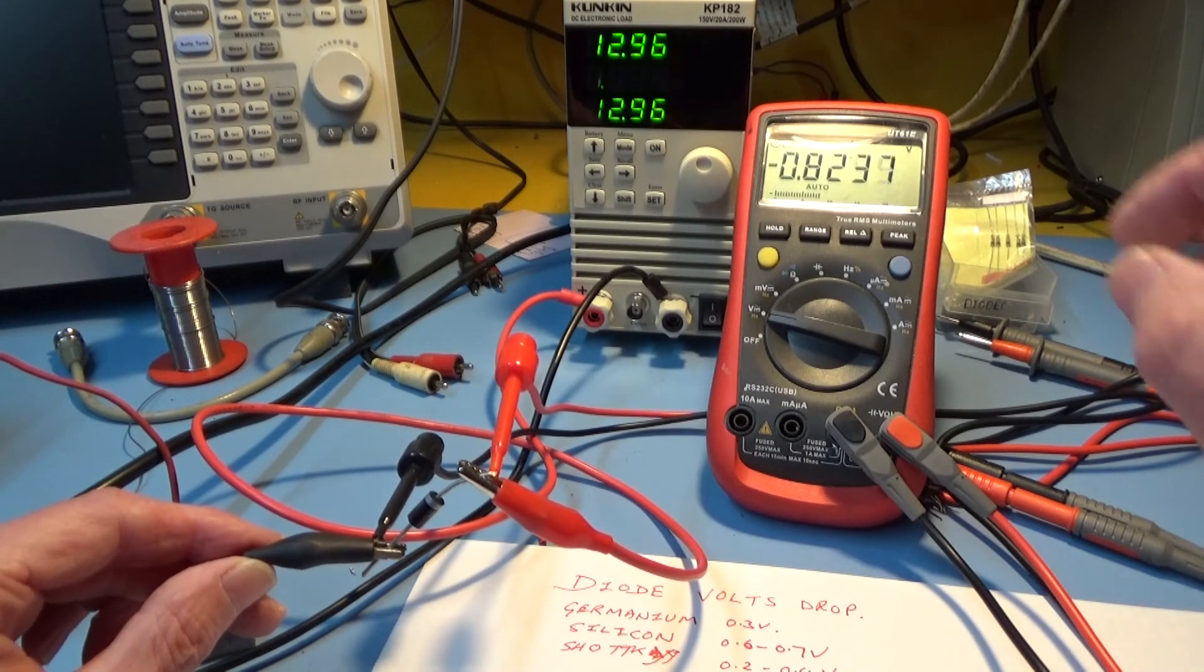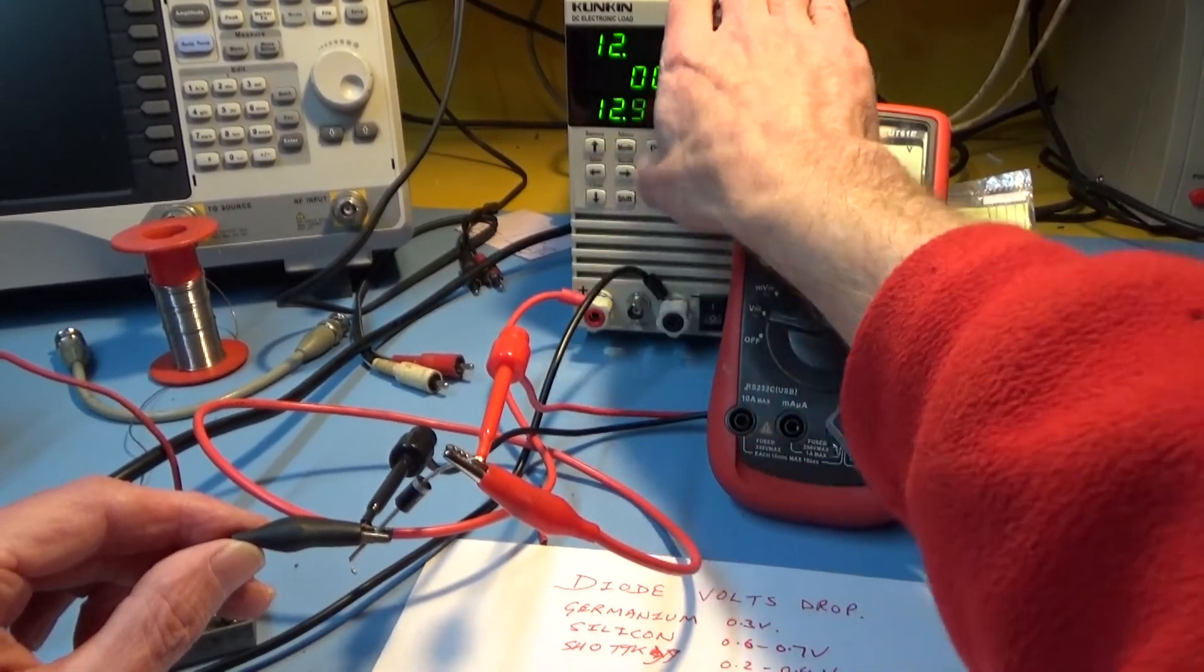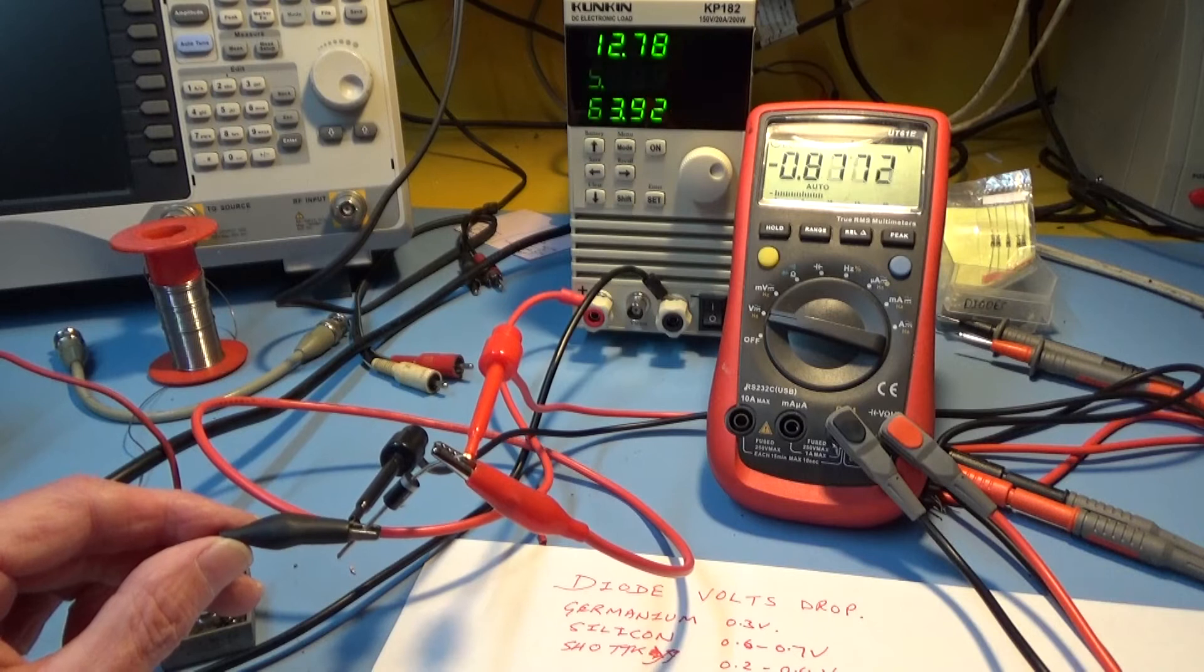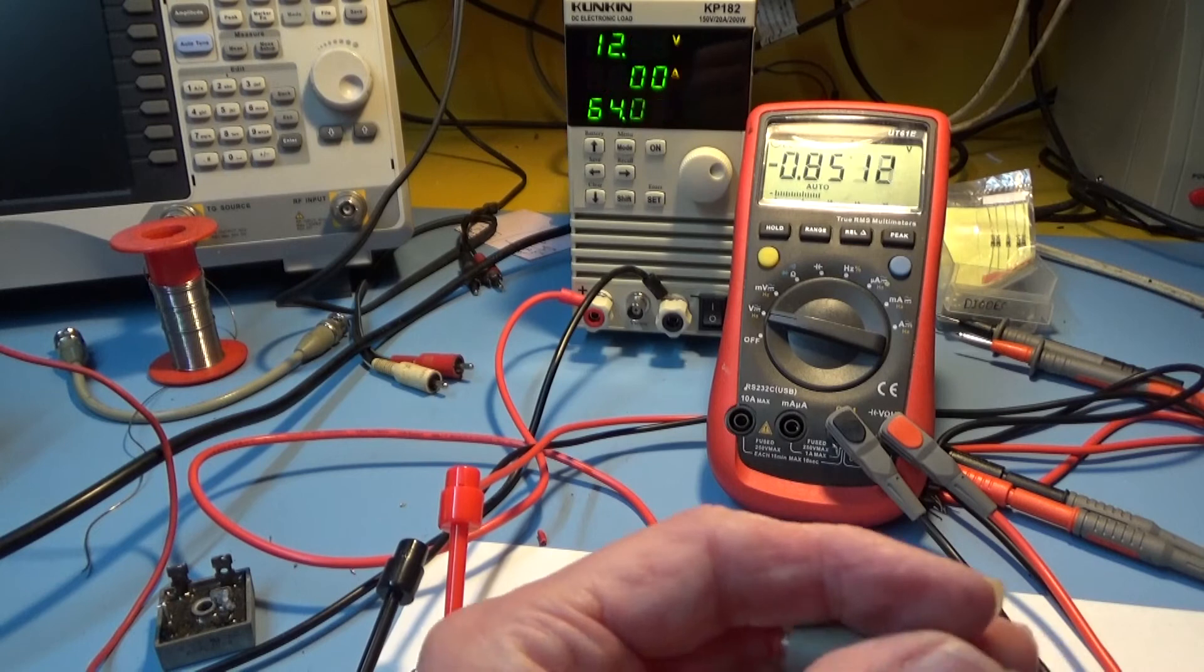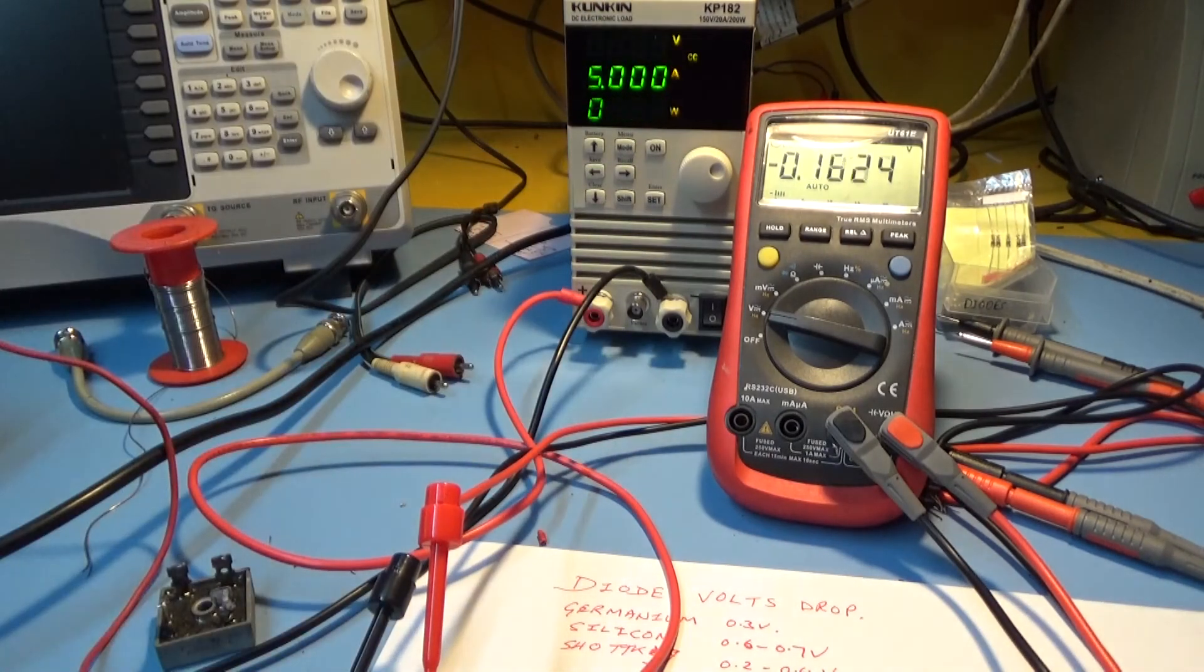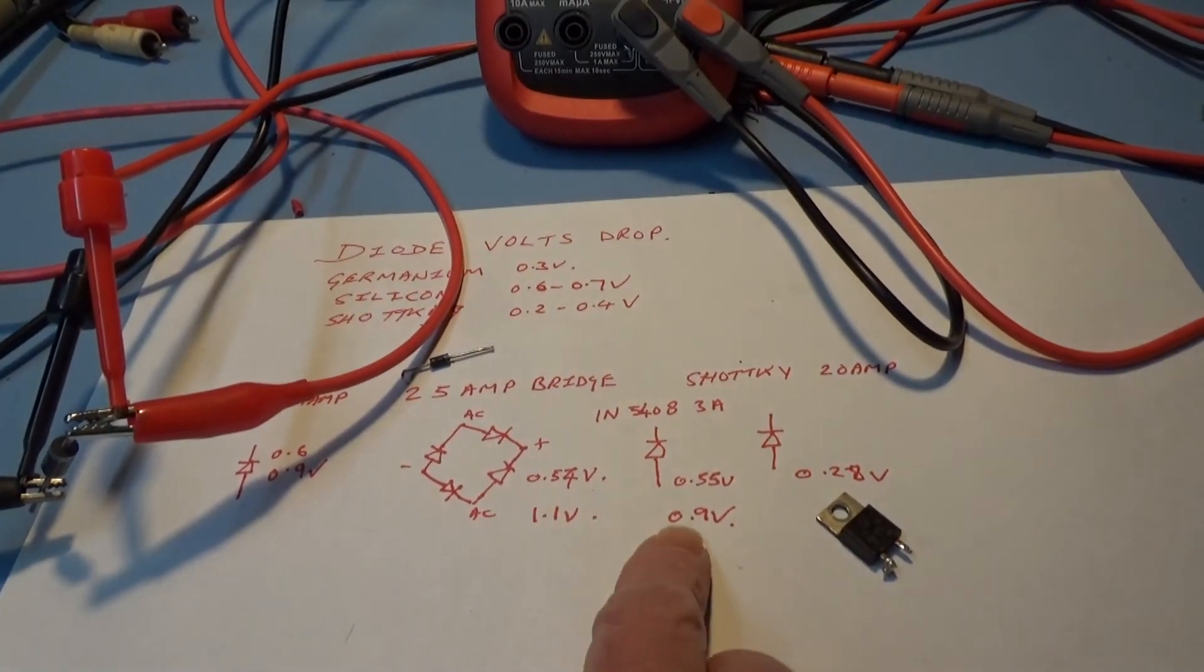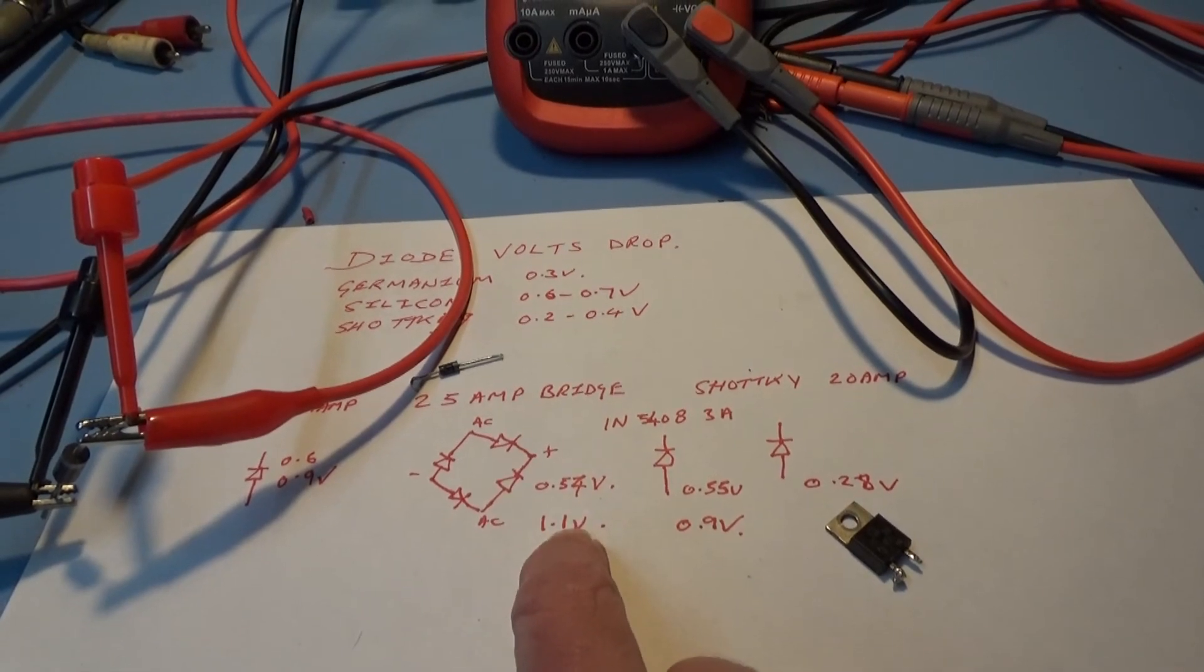If I turn that up a bit, let's go to 5 amps. So that's 0.9 volts, and the diode is red hot. Turn that off. Not such a dramatic difference as on the bridge rectifier but then again I was testing that at much more current so that would explain that.